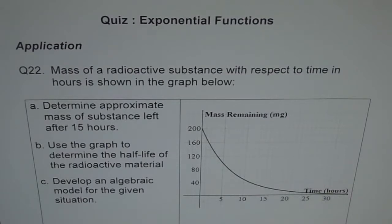The question here is question number 22. Mass of a radioactive substance with respect to time in hours is shown in the graph below. So that's your graph: mass remaining and time in hours.